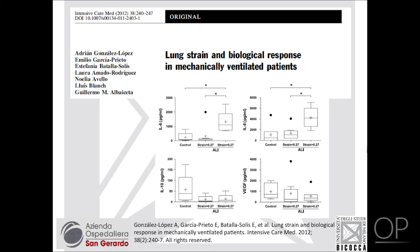One year later, a paper by the group of Albiceta came out showing basically the same thing with a very different approach: that if the strain — defined as tidal volume over end-expiratory lung volume — is above 0.27, there was a much higher circulating inflammatory activity than if strain was lower than 0.27. The numbers are in the same ballpark as what we found.